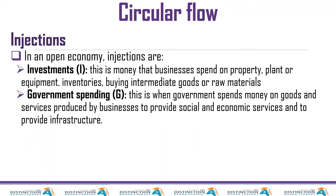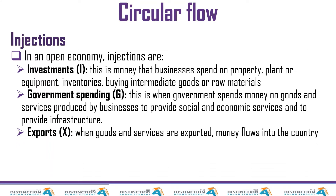The next injection is government spending, which works similarly to investment spending by businesses but is done by government. Taxes are a leakage — when government taxes, it reduces money in circulation and disposable income goes down. However, government also injects money back into the economy. So yes, government takes money from the economy but they can also inject money into the economy.